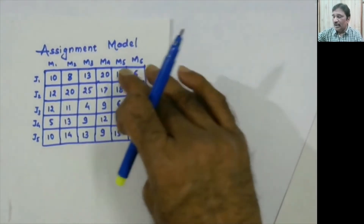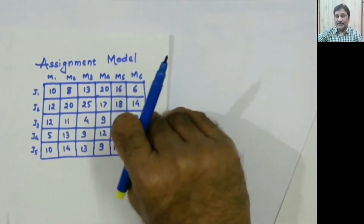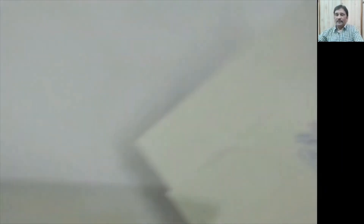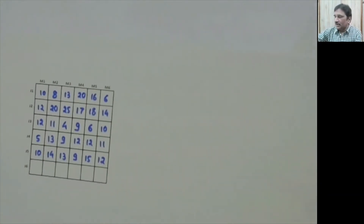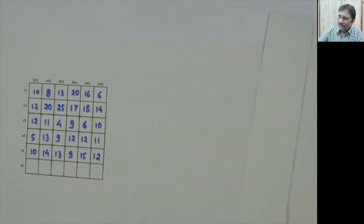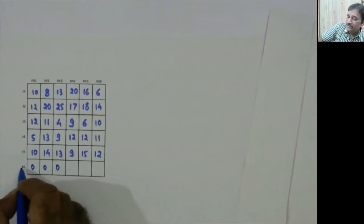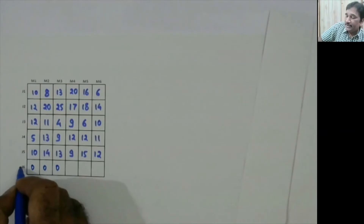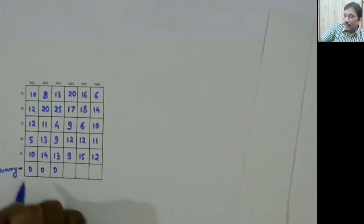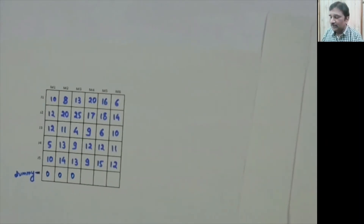Before balancing, ensure you are handling a minimization problem. If it is a maximization problem, convert it to minimization first, then balance the matrix. After balancing, add zeros to the dummy row or column. Now perform row reduction: subtract the minimum element in each row from all elements in that row. For the first row, the minimum is 6, so we subtract 6: getting 4, 2, 7, 14, 10, 0.